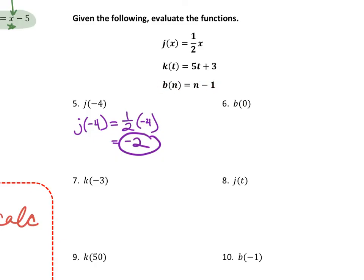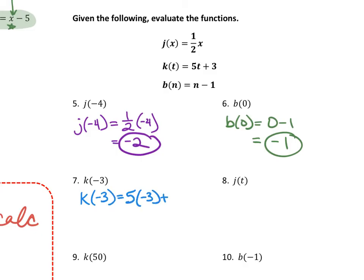Number six asks for b of 0, meaning we pick the b function and plug in 0 for every n. b of 0 equals 0 minus 1, which is negative 1. So b of 0 is negative 1, giving the ordered pair (0, −1). Number seven: k of negative 3 means we pick the k function and plug in negative 3 for every t. k of negative 3 equals 5 times (−3) plus 3. 5 times negative 3 is negative 15, and negative 15 plus 3 is negative 12.